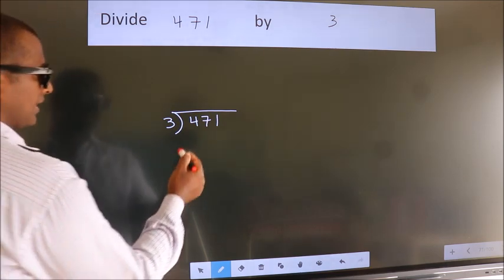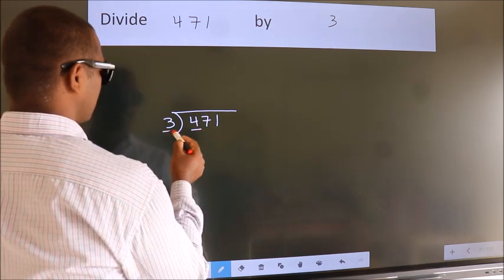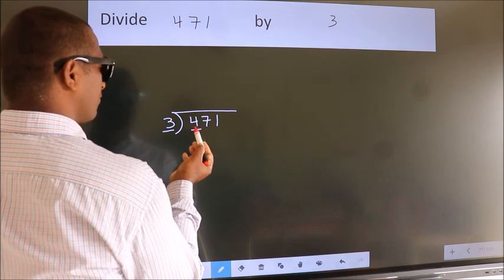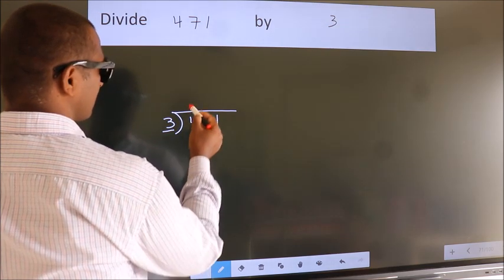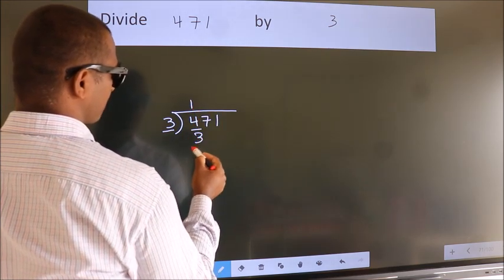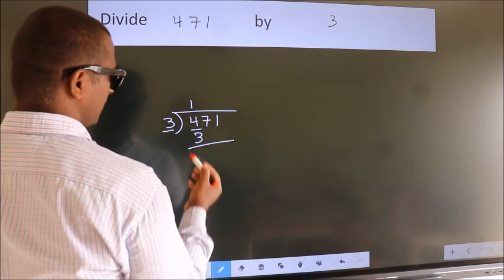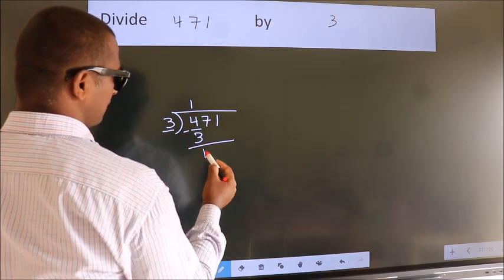Next, here we have 4, here 3. A number close to 4 in 3 table is 3 1s 3. Now, we should subtract. We get 1.